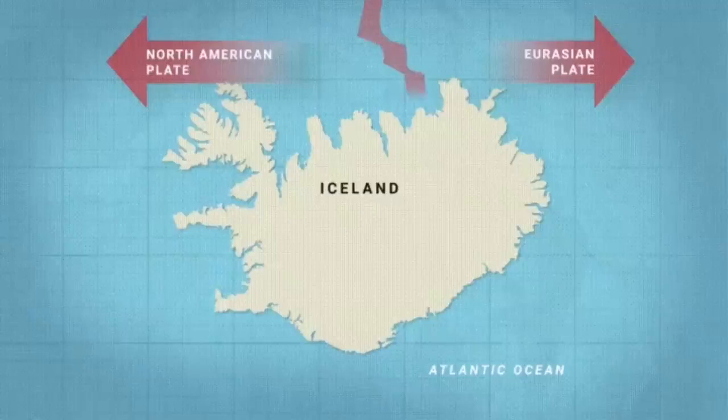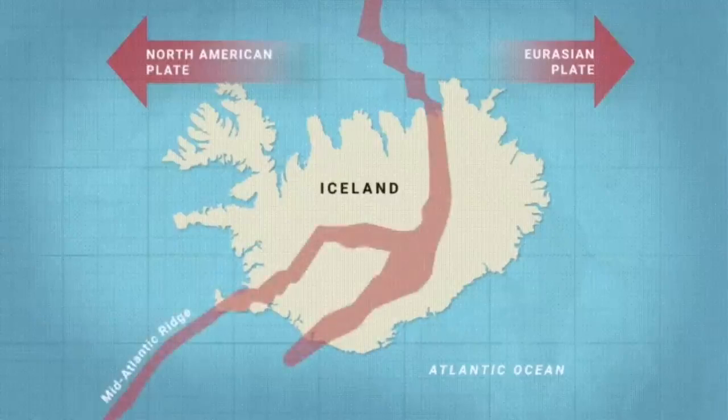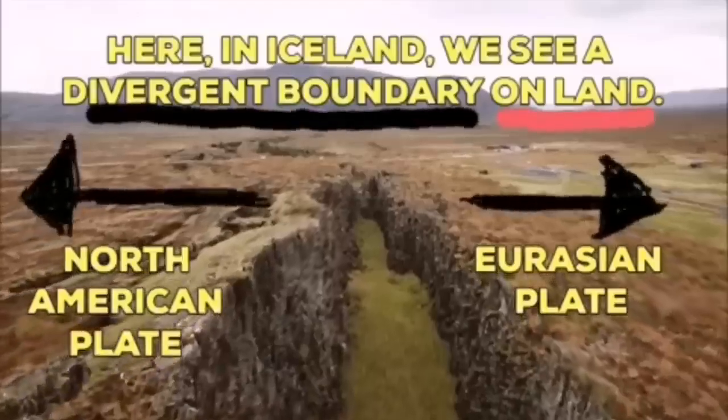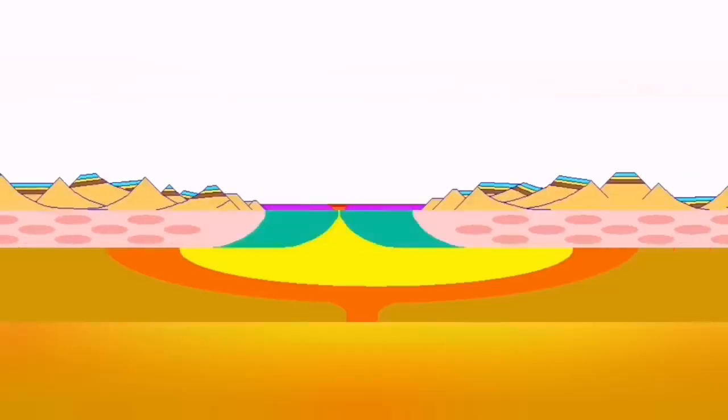Through these cracks, magma can erupt. Such a thing happens in Iceland on the land where we can see the Eurasian plate and North American plate. Through these grabens, the hollow in the middle, they are separating.